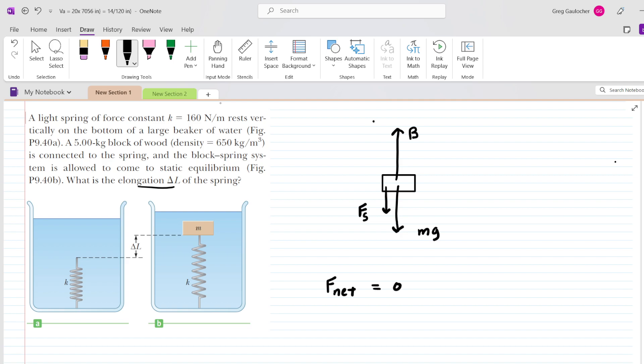We're going to assign upward as positive and downward as negative. And therefore, the net force can be represented as positive B minus the spring force minus the gravitational force. And that, again, is equal to zero.